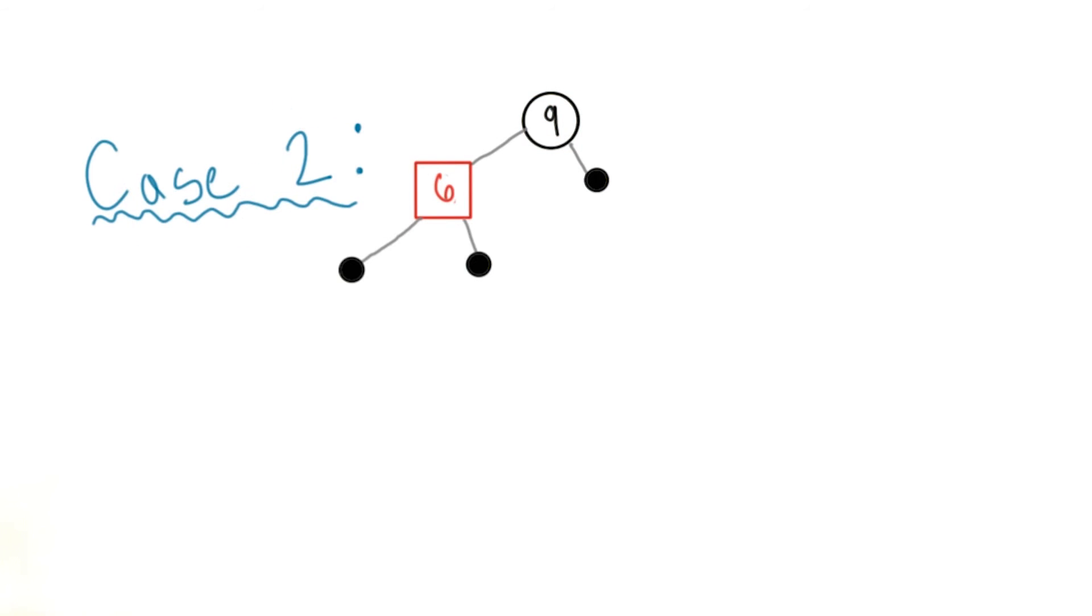If the new parent node is black, you don't need to do any work. Since you're adding a red node, you haven't upset the balance of black nodes in any path or violated any of the other rules.